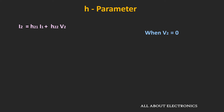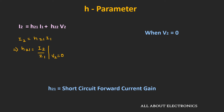Similarly, when v2 equals 0, from the second expression we can write: i2 equals h21 times i1, so h21 equals i2 divided by i1. The current in the numerator is on the port 2 side while the current in the denominator is on the port 1 side. This is a unitless parameter, and since port 2 is short-circuited, h21 is known as the short-circuit forward current gain.